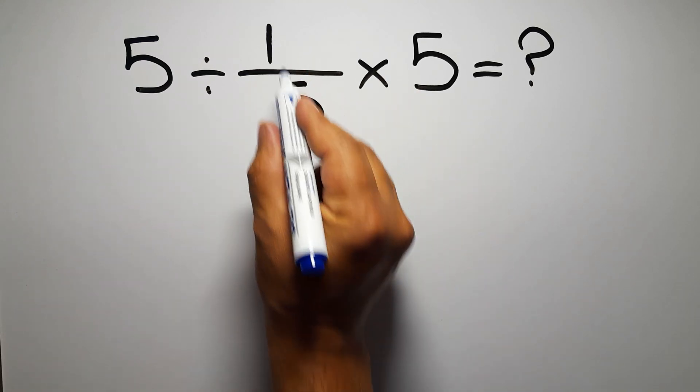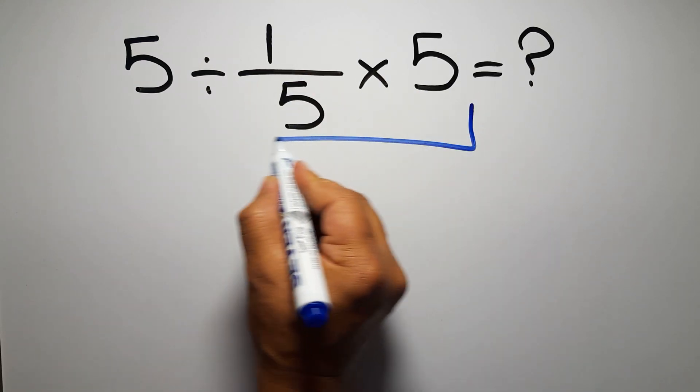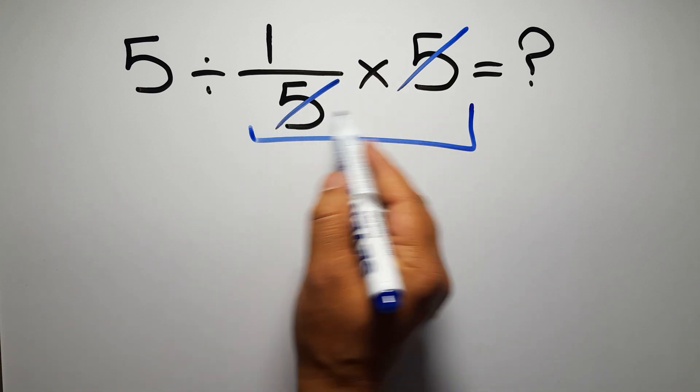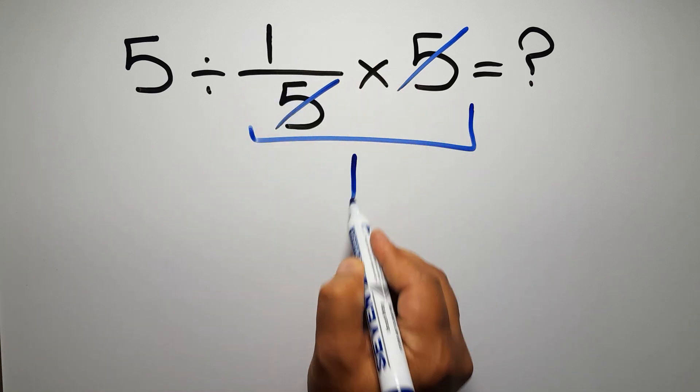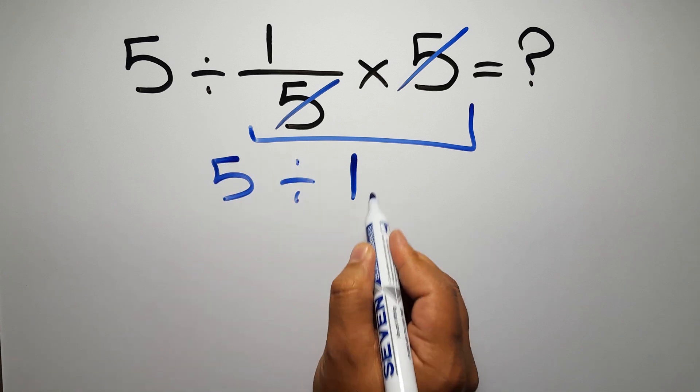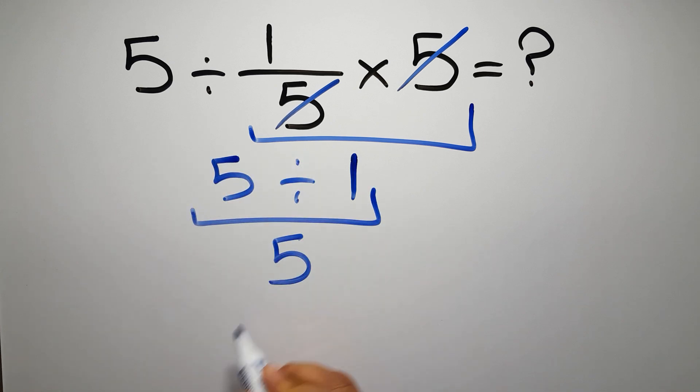First, we do this multiplication: 1 over 5 times 5. We can easily cancel this 5 and this 5, so here we have just 1. And 5 divided by 1 gives us 5. But this answer is not correct, because...